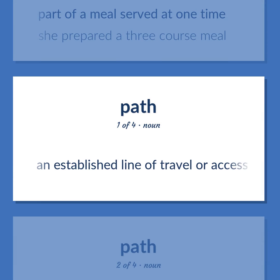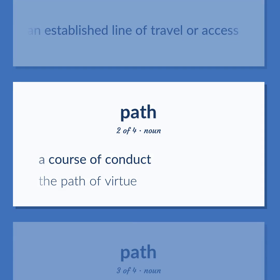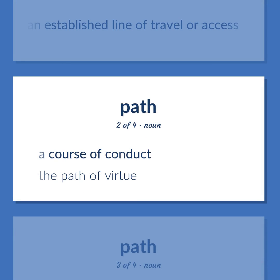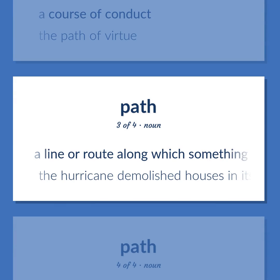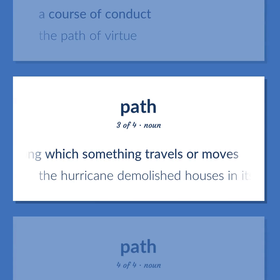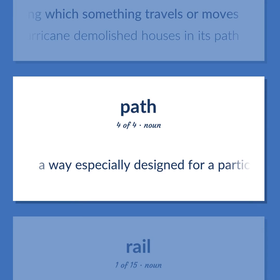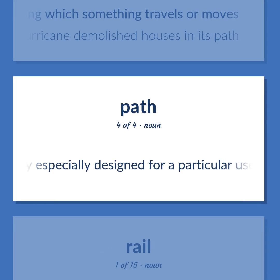Course/Path: An established line of travel or access — a course of conduct; the path of virtue. A line or route along which something travels or moves — the hurricane demolished houses in its path. A way especially designed for a particular use.